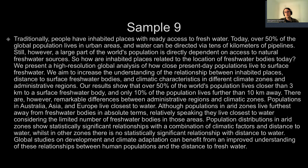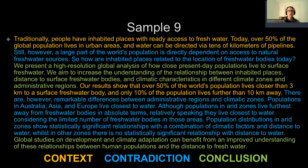This sample comes from a paper published in 2011 in PLOS ONE called 'A Global Analysis of Population Distance to Freshwater Bodies.' In this sample, there is a series of two context-contradiction-conclusion statements. They stack one on top of the other in this abstract and have done this quite effectively. Abstracts in particular, when they're allowed to be longer, really lend themselves to this sort of stacked CCC structure.